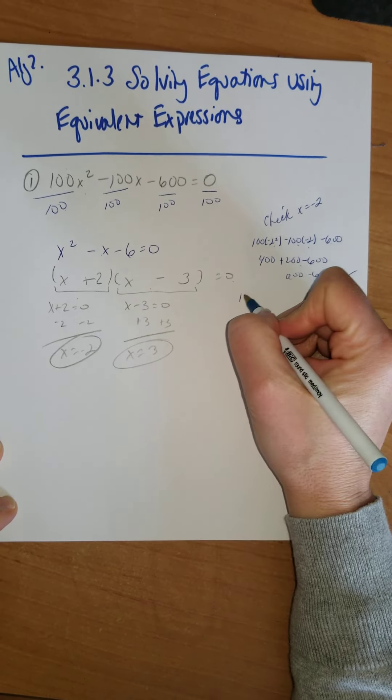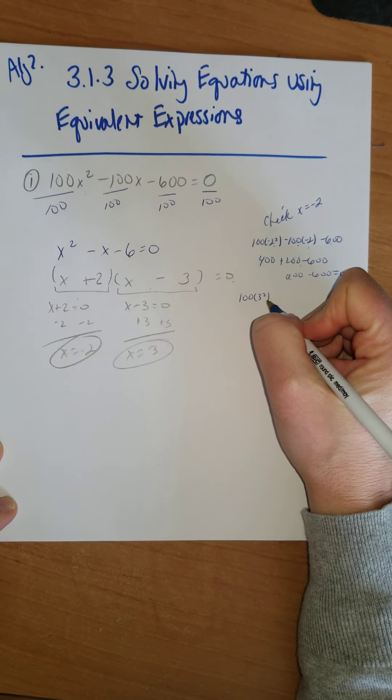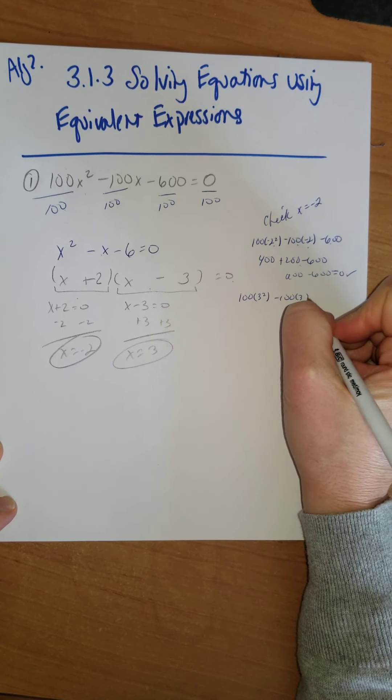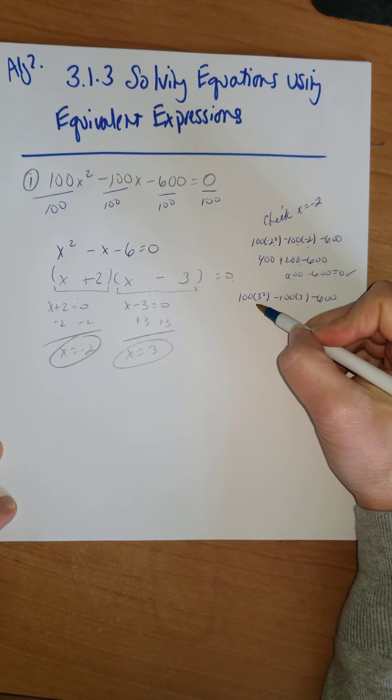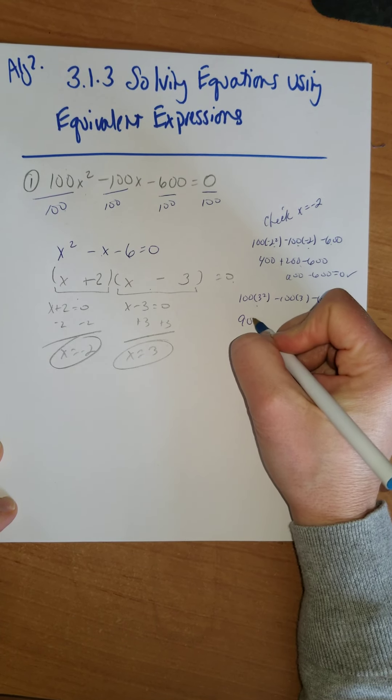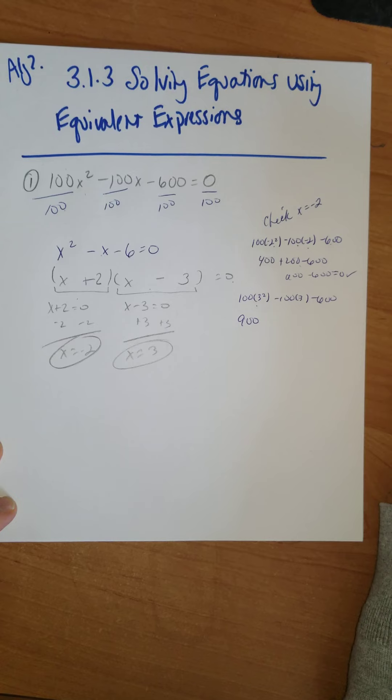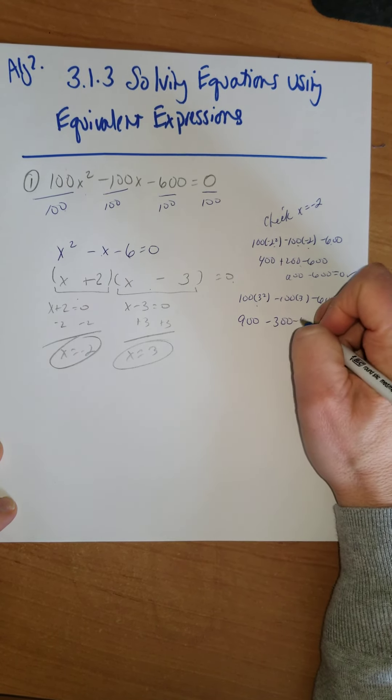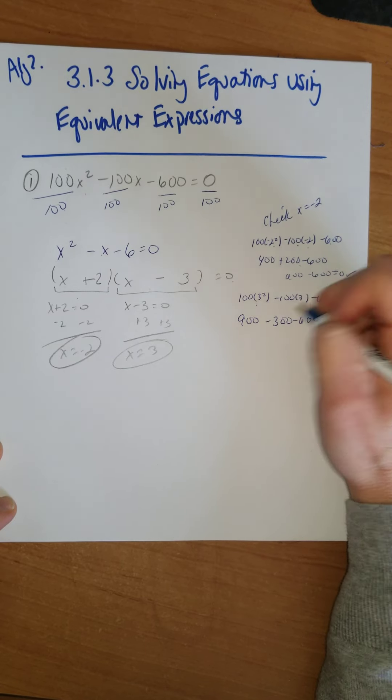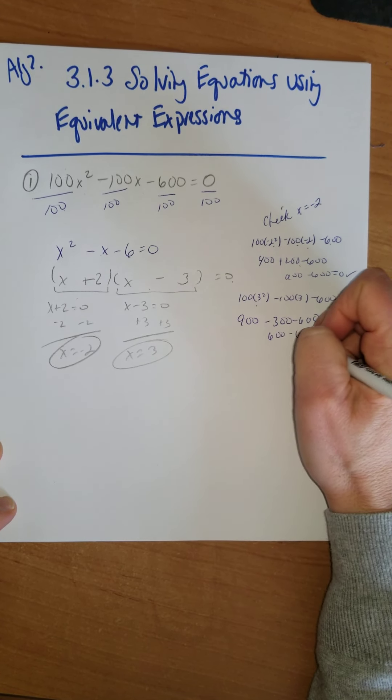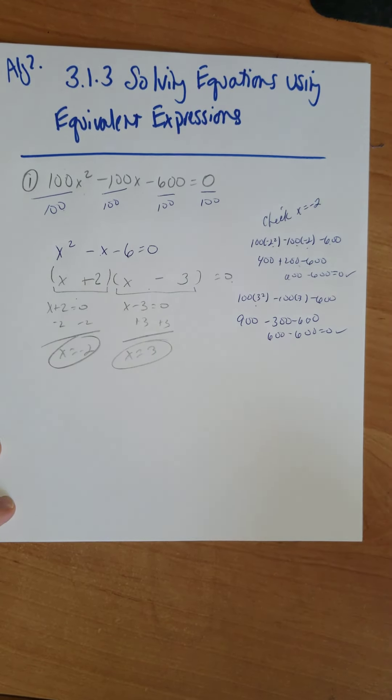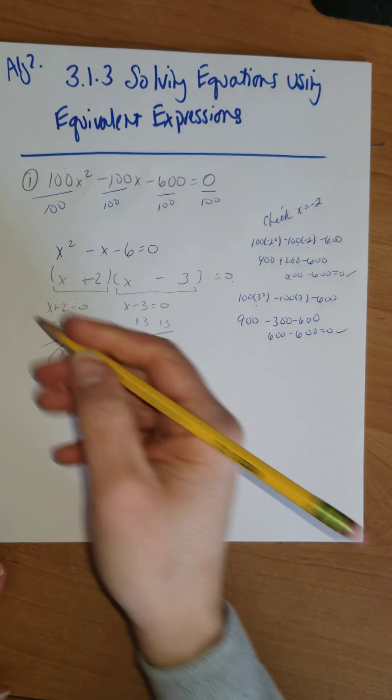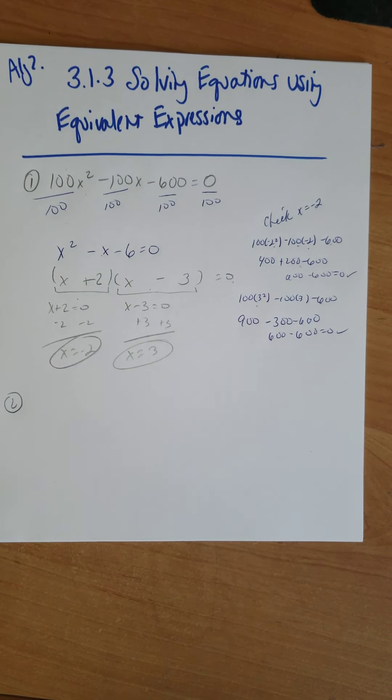Now, putting 3 in there, we would take 100 times 3² minus 100 times 3 minus 600. 3 squared is 9. 9 times 100 is 900. 3 times 100 is 300, but that's going to be minus 300, and then I got minus 600. 900 minus 300 is 600. Minus that 600, that equals 0, and that checks. So that is my first problem.